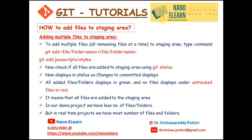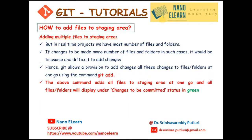In our demo project we have fewer files, but in real-time projects there are many more files and folders. If changes need to be made to a large number of files, it would be tiresome and difficult to add them individually. Hence, git allows a provision to add all changes at one go using the command git add dot. This command adds all files to the staging area at once, and all files and folders will display under 'changes to be committed' status in green color.